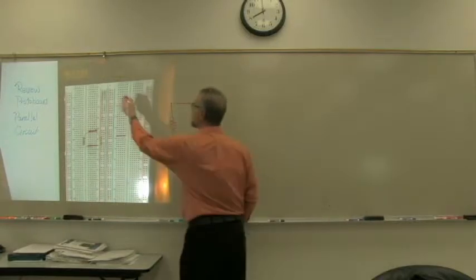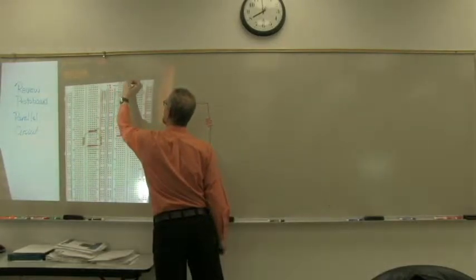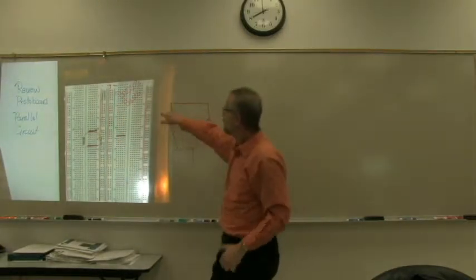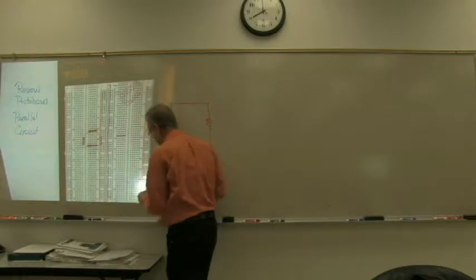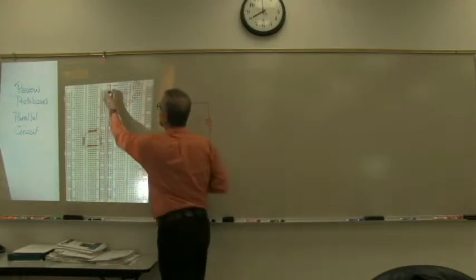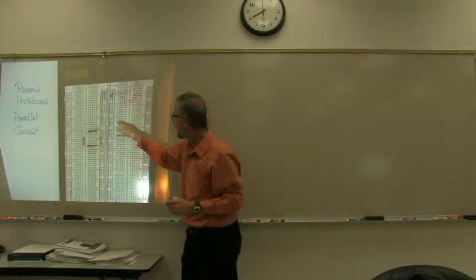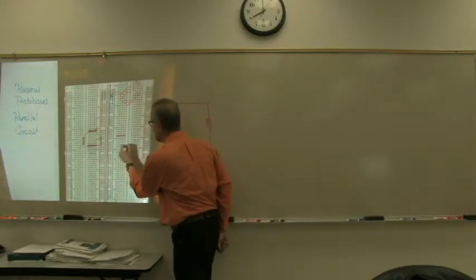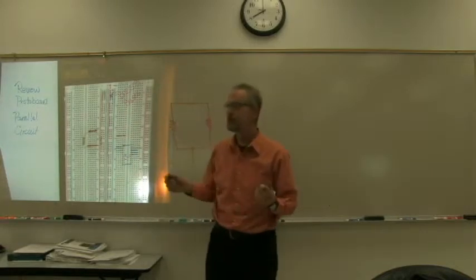In this row you'll notice we have a plus and a minus here. These are what we call buses. All of these are connected to each other and all of these are connected to each other but not across. So these are connected vertically, these are connected horizontally. You'll notice that there's a channel in the middle here. That channel is there so that you can put integrated circuits and have the pins from the integrated circuits each be available so that you can run them to more than one place.